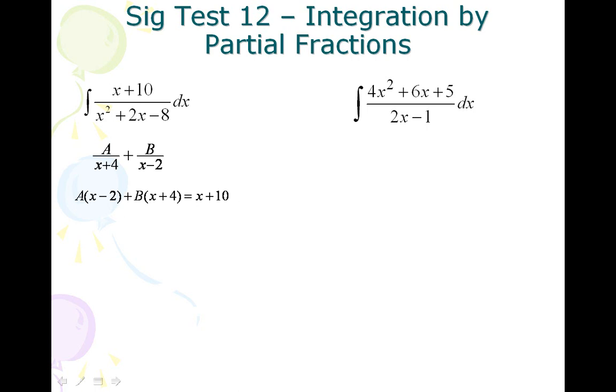So first thing you might do is I'll plug in a 2 in for the x. That makes the A term go away, plug 2 in here and plug 2 in there, I get 6B is equal to 12, so B equals 2.